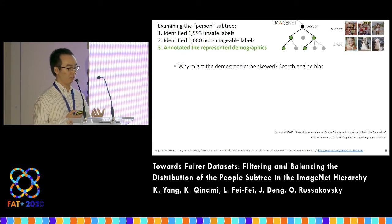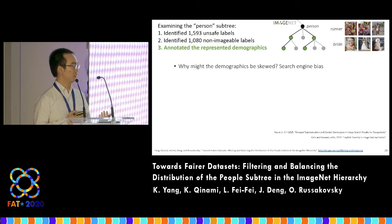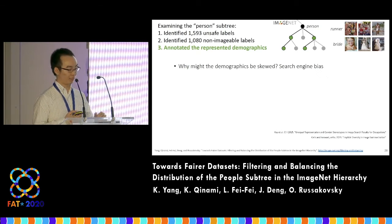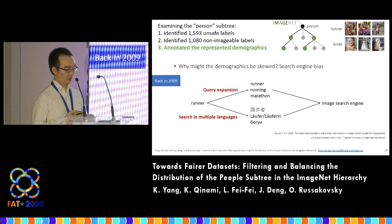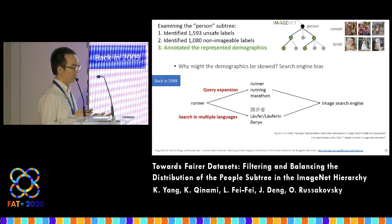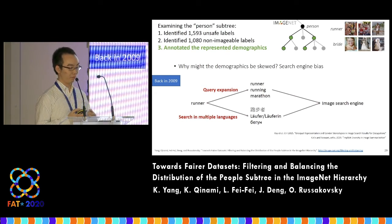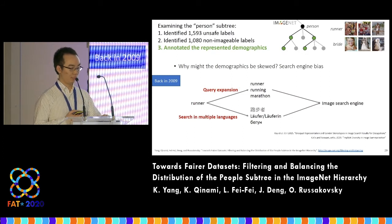Web search engines have been known for retrieving biased results in terms of demographics. During the construction of ImageNet, researchers took measures to diversify the images. First, they performed query expansion using different keywords related to the same concept for querying the search engine.